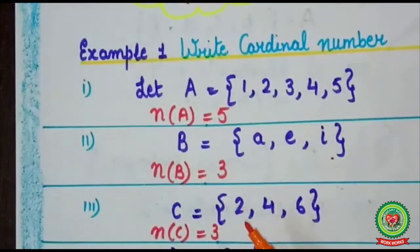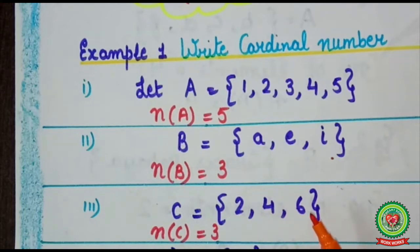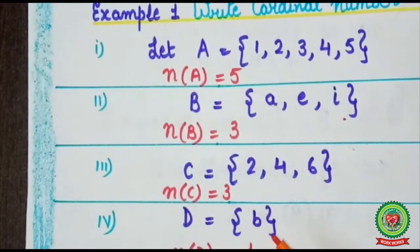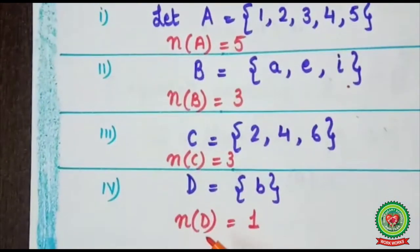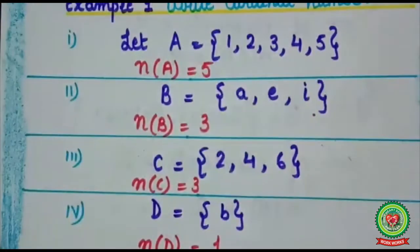In set C, elements are 2, 4, 6. Counting the number of elements: 1, 2, 3. So the cardinal number of C is n(C) = 3. One more example is set D — in D, only one element is there, that is B. So the cardinal number of D equals 1, that is n(D) = 1.